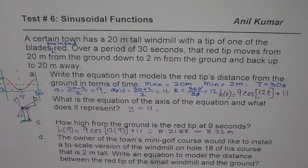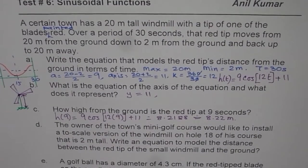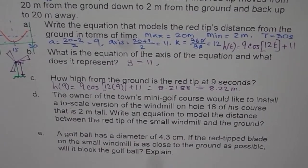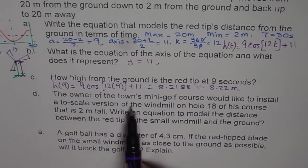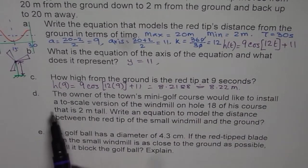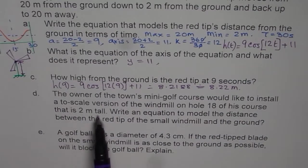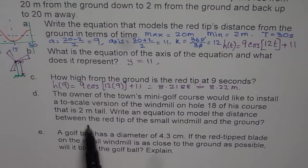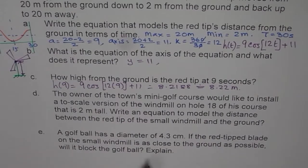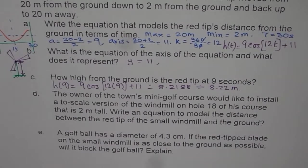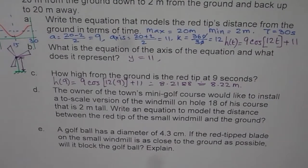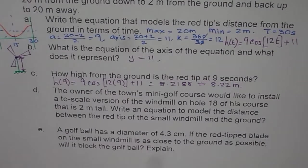Now let us look into the other two parts of this question. So let me push this page a bit forward. And part D and E is what we are going to explore now. The owner of the town's mini golf course would like to install a to-scale version of the windmill on hole 18 of his course that is 2 meters tall. Write an equation to model the distance between the red tip of the small windmill and the ground. Now that is part D. And part E is A golf ball has a diameter of 4.3 centimeters. If the red tip blade of the small windmill is as close to the ground as possible, will it block the golf ball? Explain. You can pause the video and answer these two parts now.